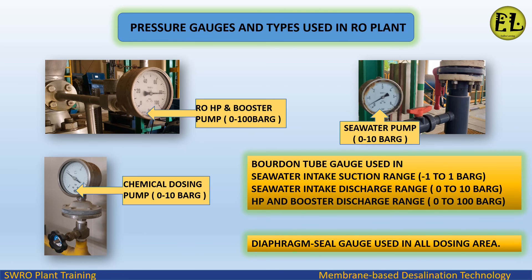Pressure gauges and types used in RO plant: Bourdon tube type gauges are used from seawater intake to the product system. Seawater intake suction range: -1 to 1 barg. Seawater intake discharge range: 0 to 10 barg. HP and booster discharge range: 0 to 100 barg. Diaphragm seal gauge types are used in all dosing areas.